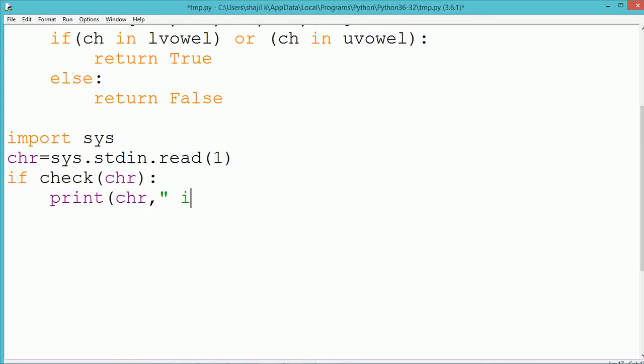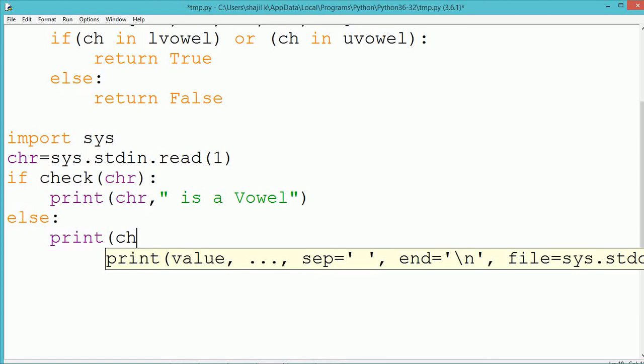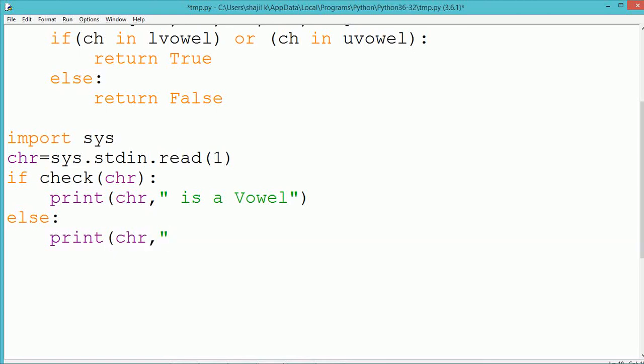Now the single character which is read from the user will be passed to our function which we have created. The name of the function is check. Now if the function is returning the value true that means chr contains a vowel character. Otherwise the chr contains a non-vowel character.